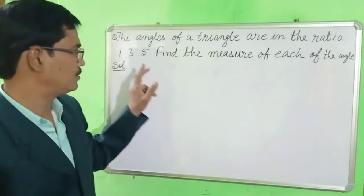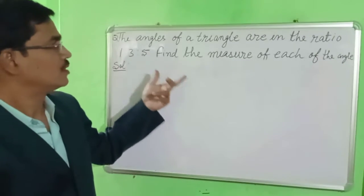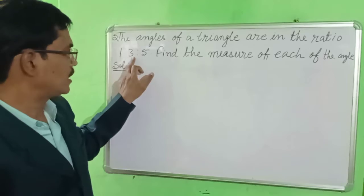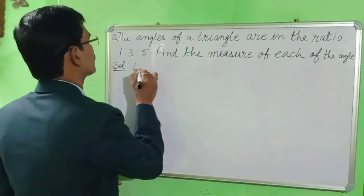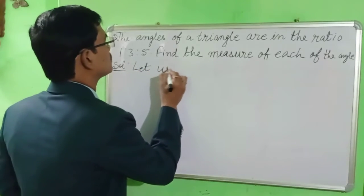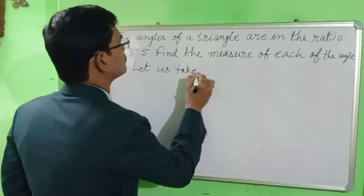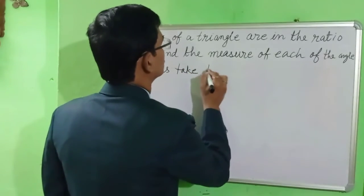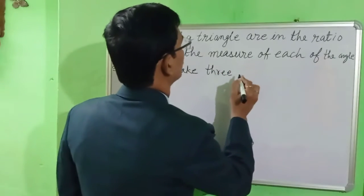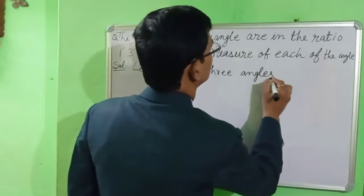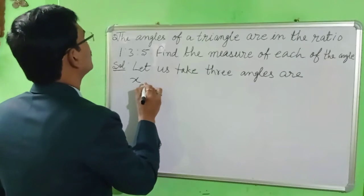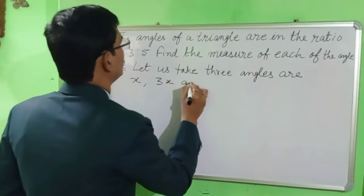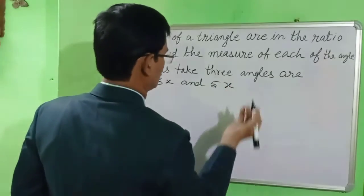Let us start. First of all, we assume that the angles of the triangle will be X, 3X, and 5X. So the three angles are X, 3X, and 5X.